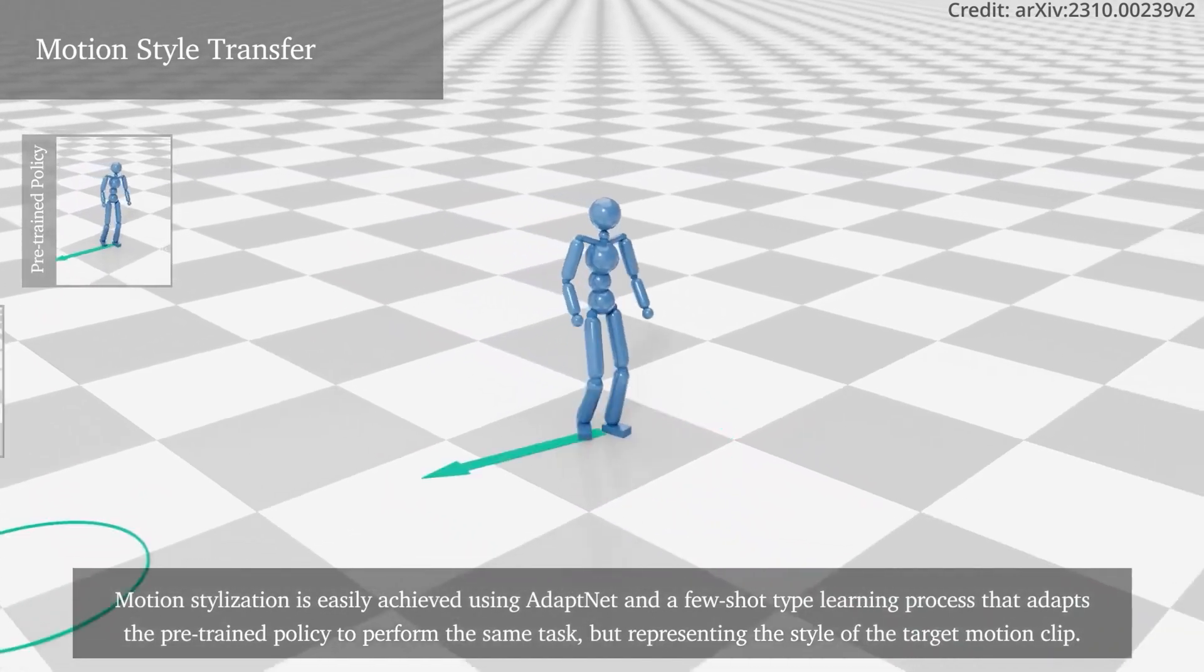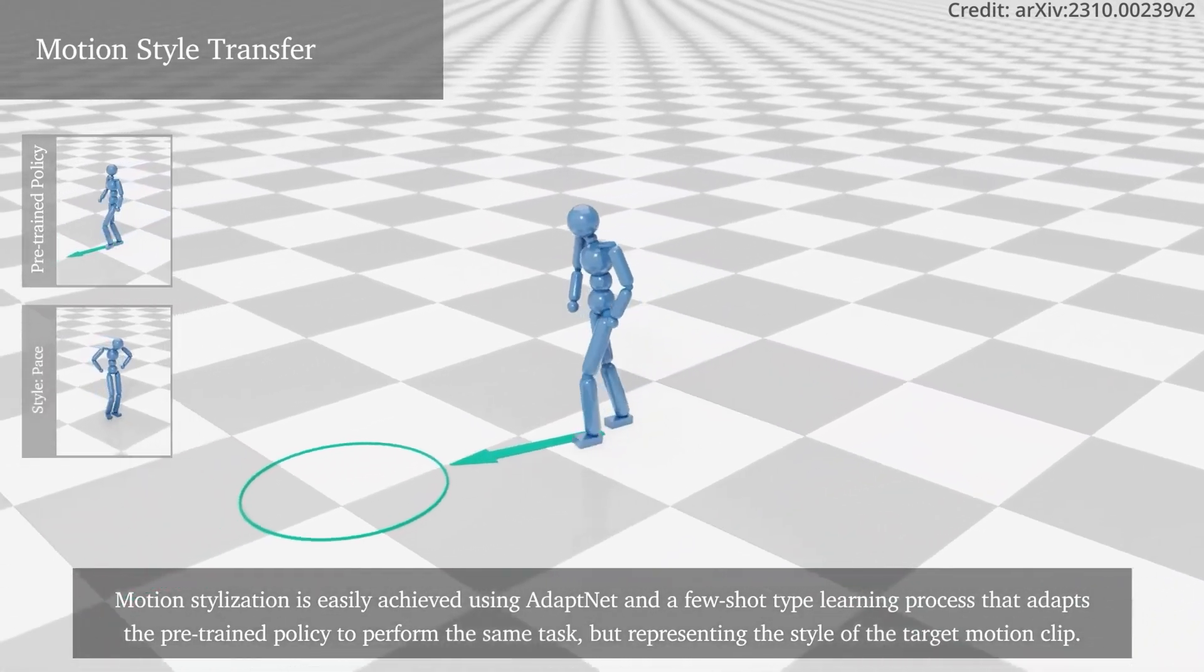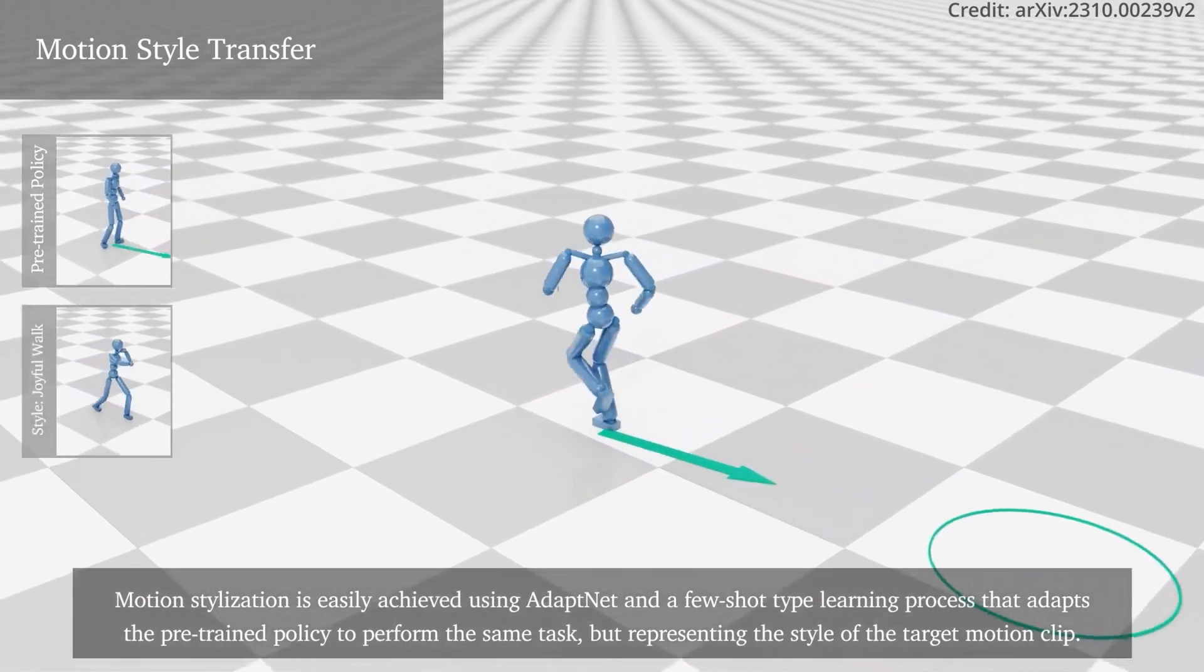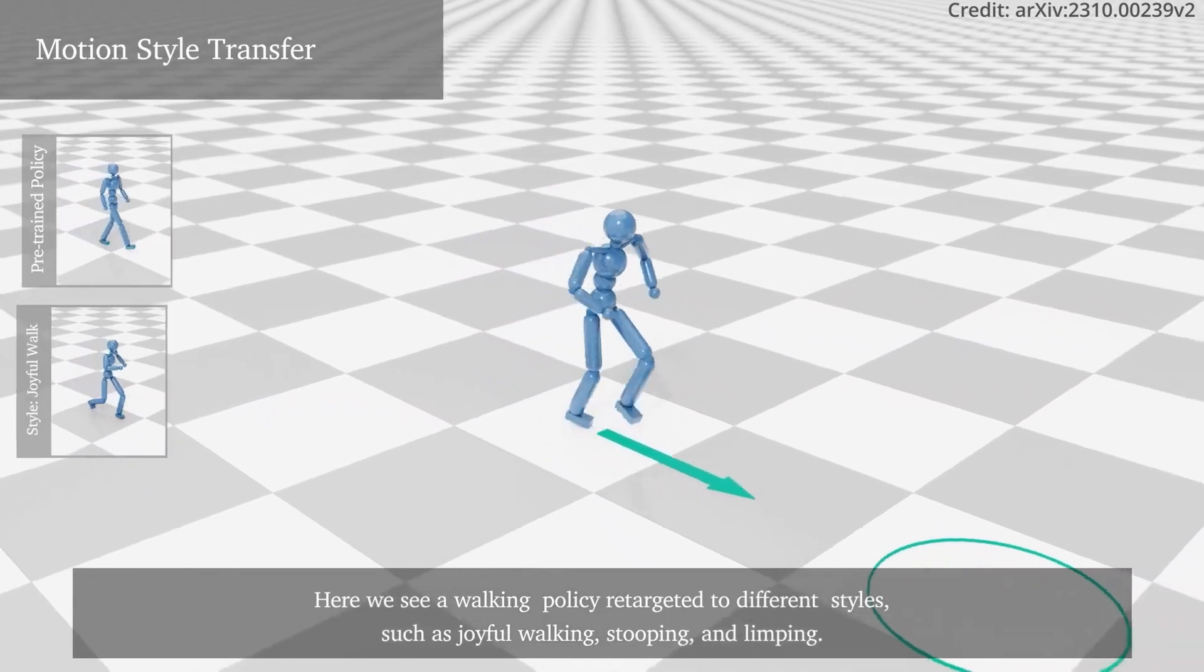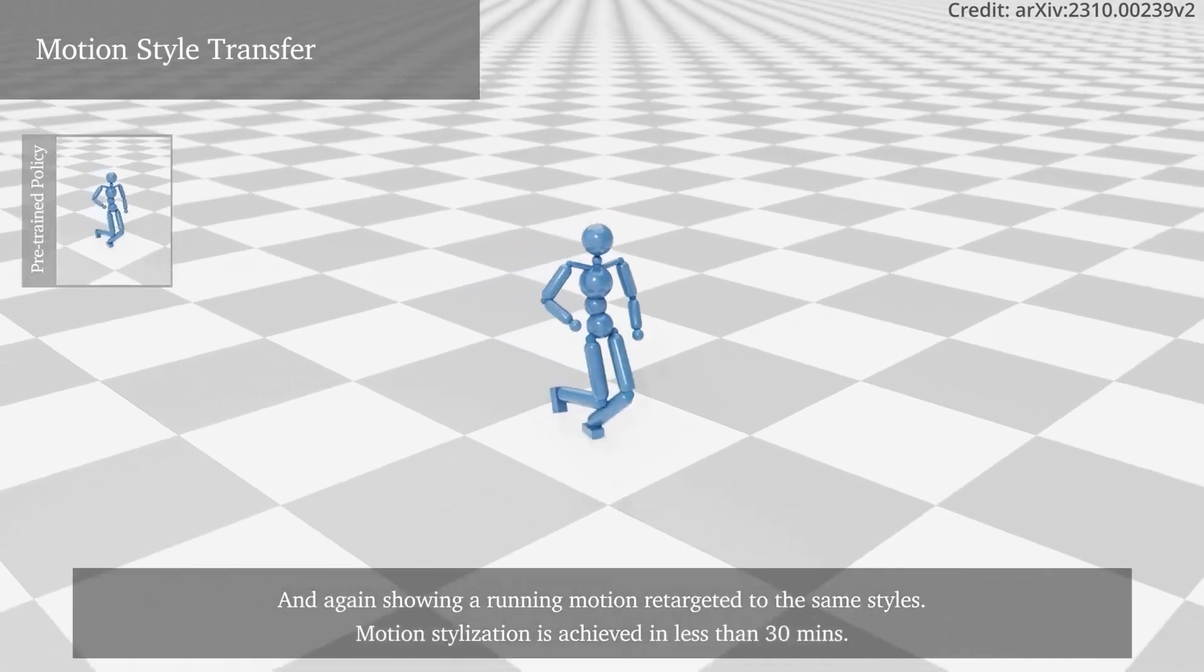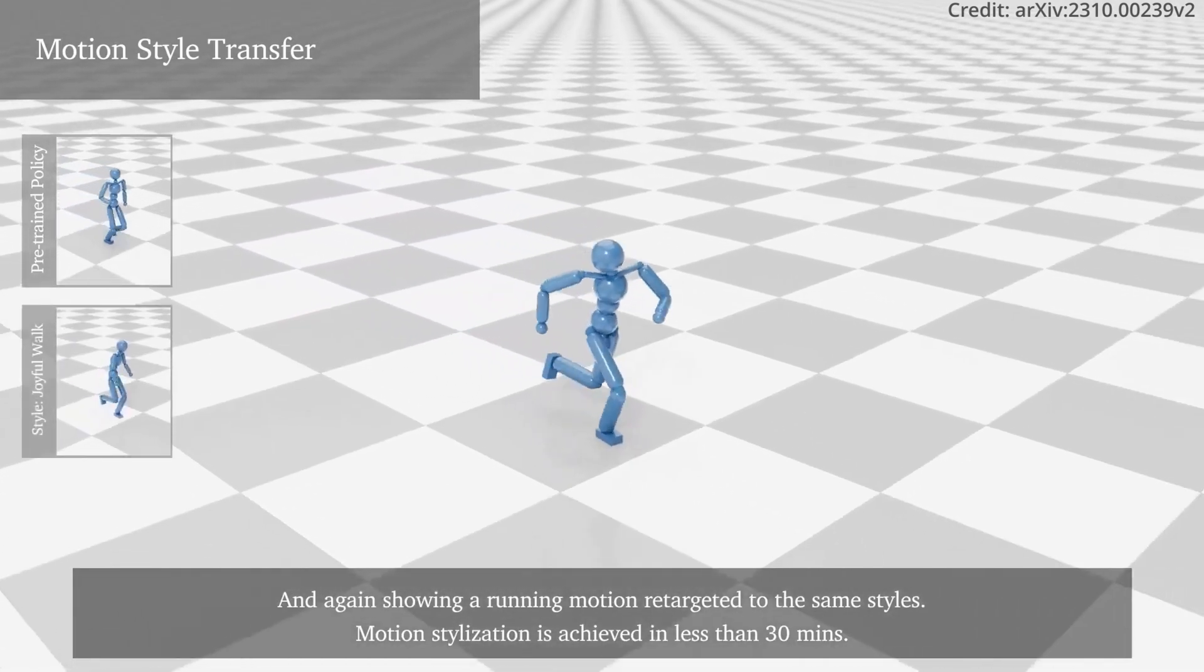It adapts the pre-trained policy to perform identical tasks but mirrors the style of the target motion clip. Whether it's a joyful walk, a stooping posture, or a limping motion, AdaptNet retargets walking and running policies to different styles, achieving motion stylisation in under 30 minutes.